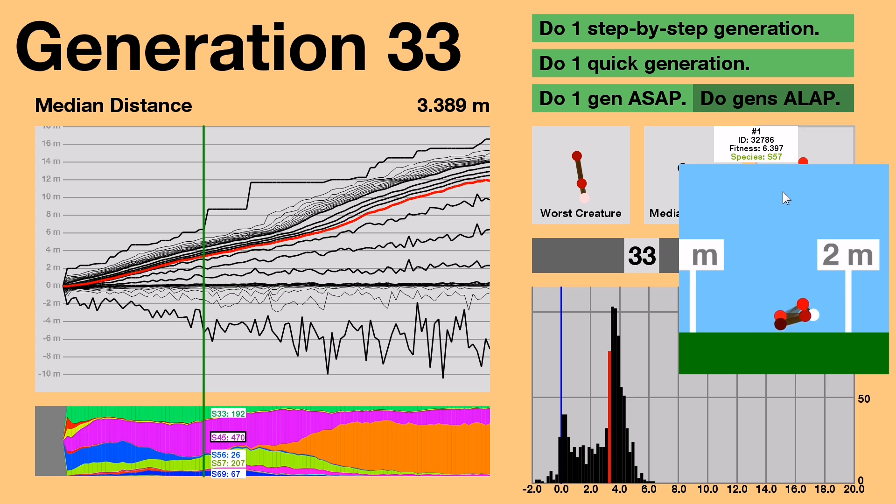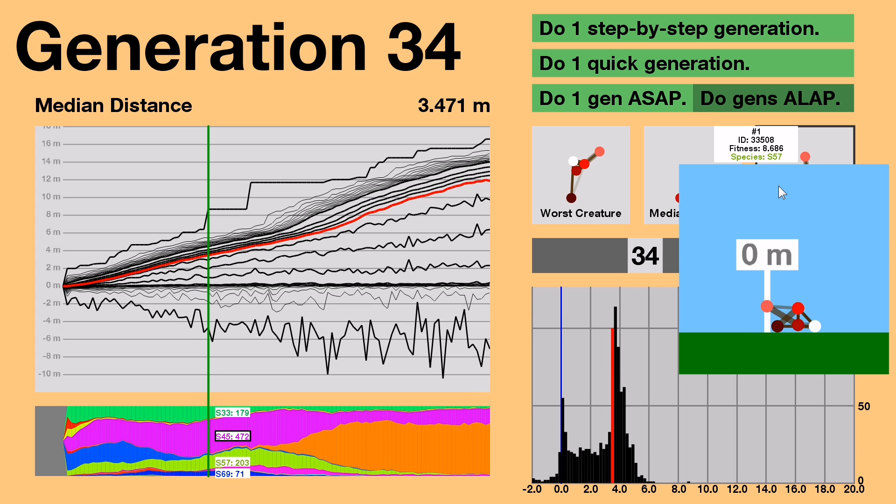The breakthrough occurred when one of the megacreature's offspring received a lucky mutation by chance that placed this friction-y node lower to start with. This allowed the creature to hit the ground with its nodes running, giving it a 2.3 meter advantage over its parent.